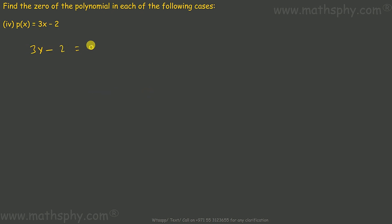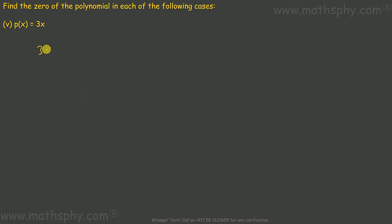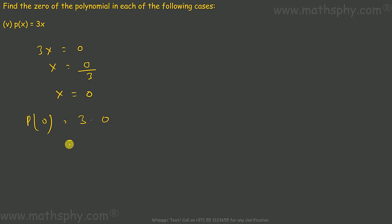For 3x minus 2 equals to zero, 3x equals to 2, so x would be 2 over 3. If you replace x with 2 over 3, this equation will become zero. It means 2 over 3 is the zero for this polynomial. For 3x equals to zero, x equals to zero over 3, so x equals to zero. We take zero in place of x, this will become 3 into zero, which means zero. So the zero for this polynomial would be zero.